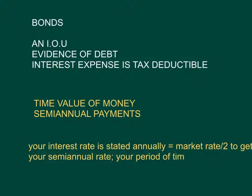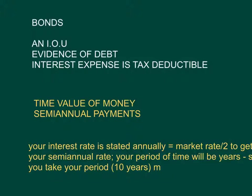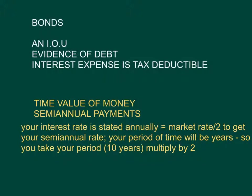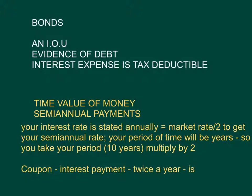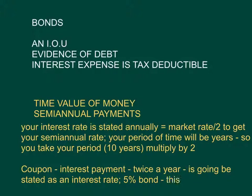Your period of time will be in years. So you take your period — let's say 10 years — and multiply by 2. The other thing you're going to have on this bond is a coupon payment. The coupon or interest expense, your interest payment, which is twice a year, is going to be stated as a rate, because that's what's going to be on the face of the bond. So let's say you have a 5% bond — that's 5% divided by 2, or 2.5% every 6 months.